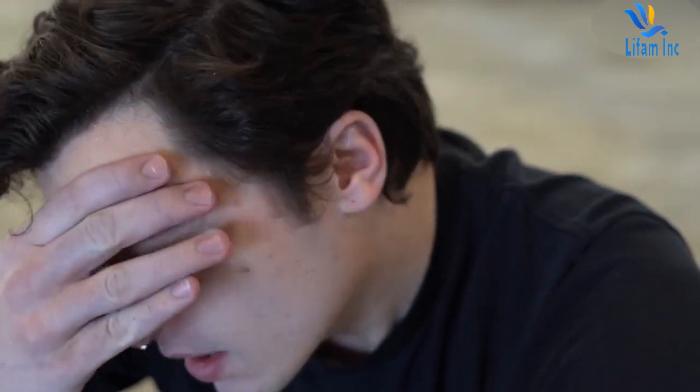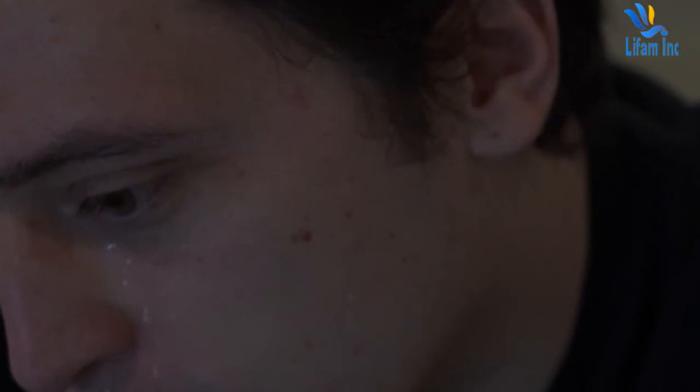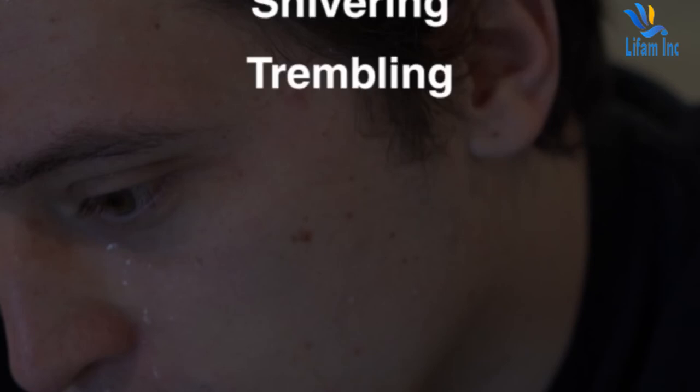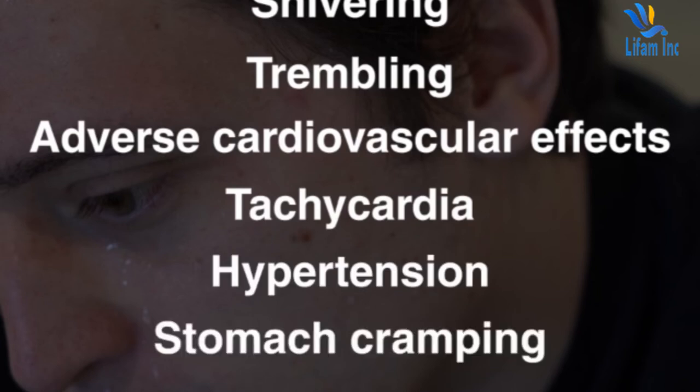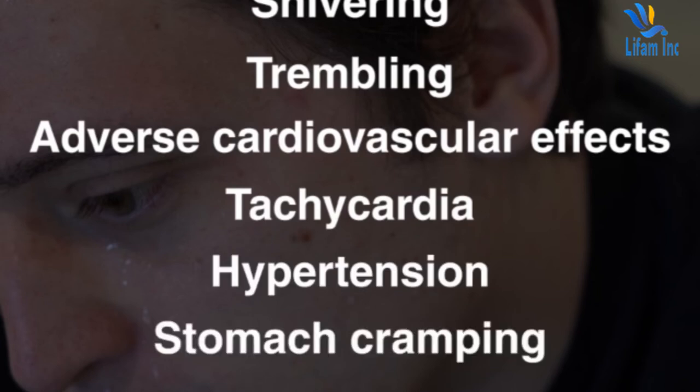The administration of naloxone can precipitate symptoms of opioid withdrawal, including diaphoresis, a runny nose, and shivering or trembling. Adverse cardiovascular effects such as tachycardia and hypertension, stomach cramping, nausea, vomiting, or weakness may also occur.